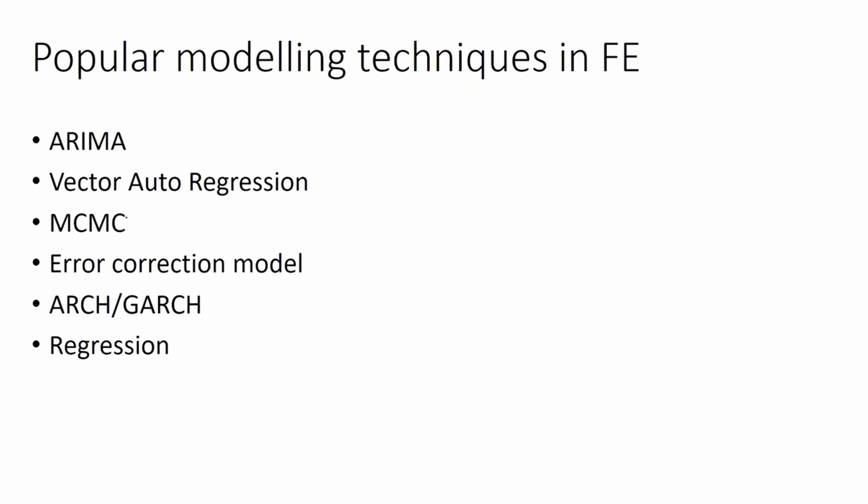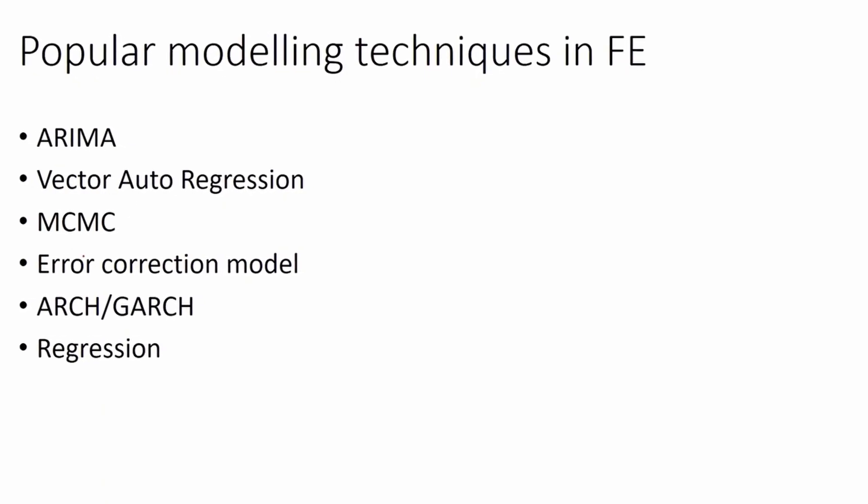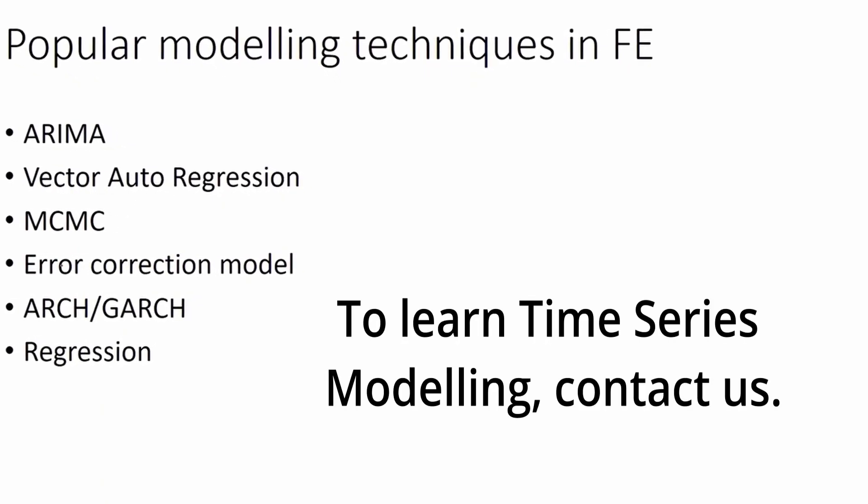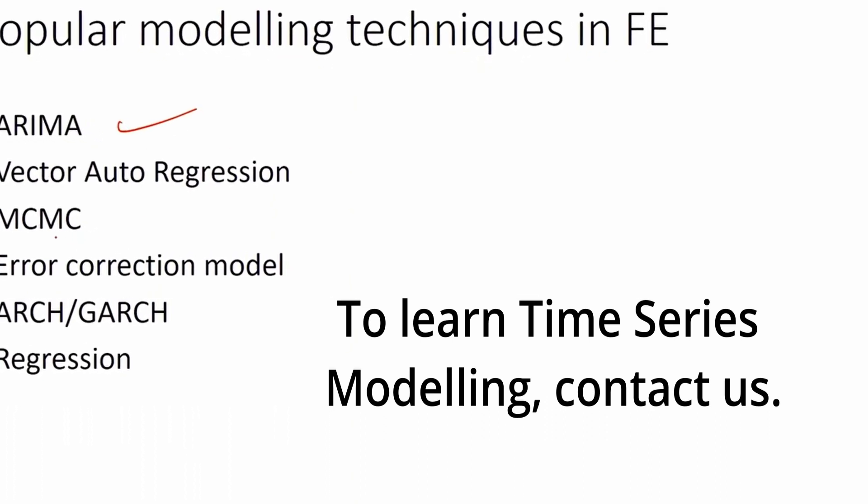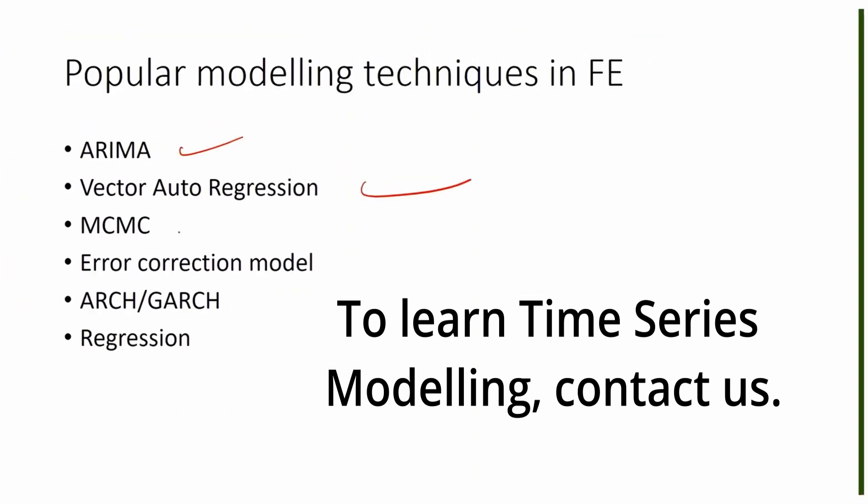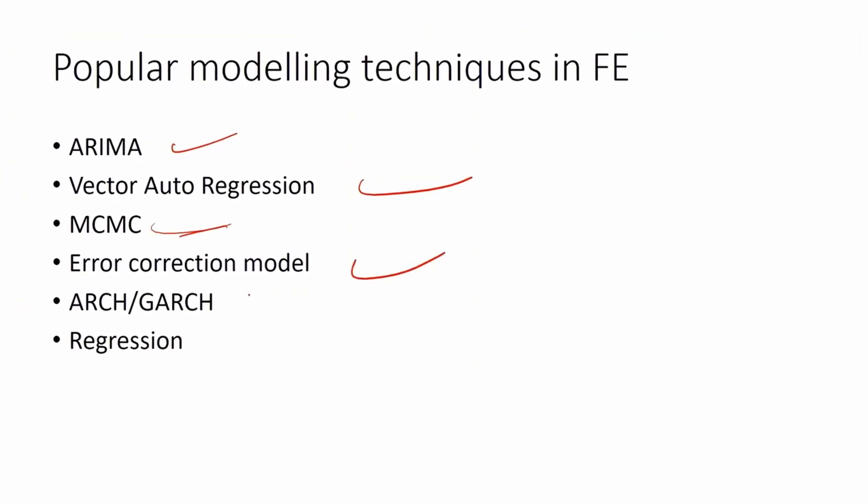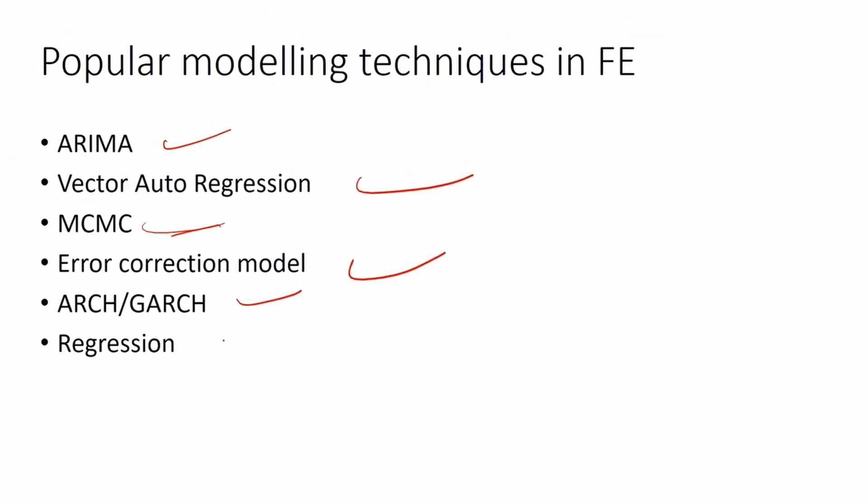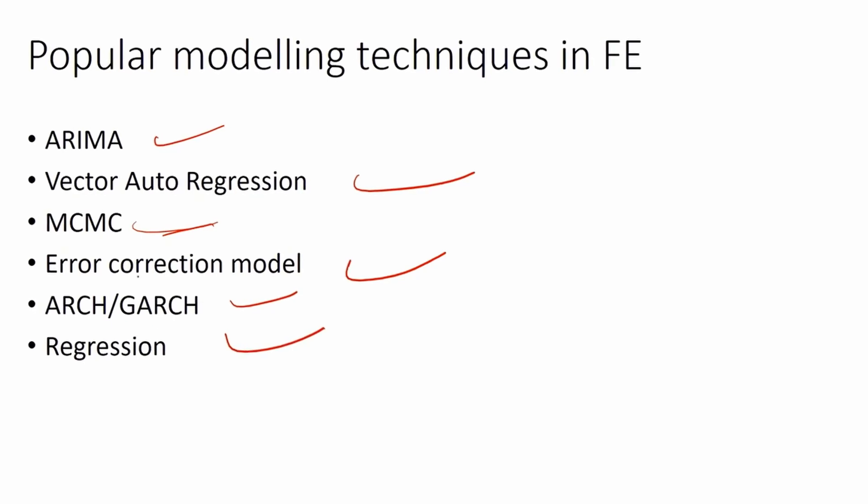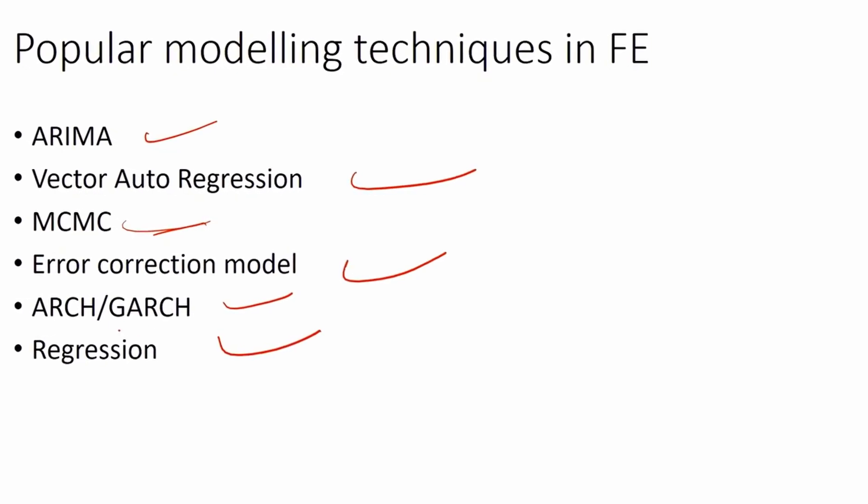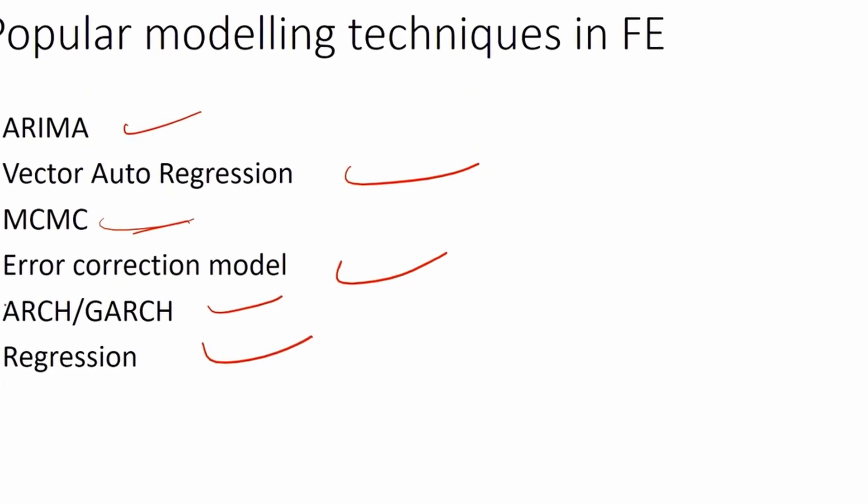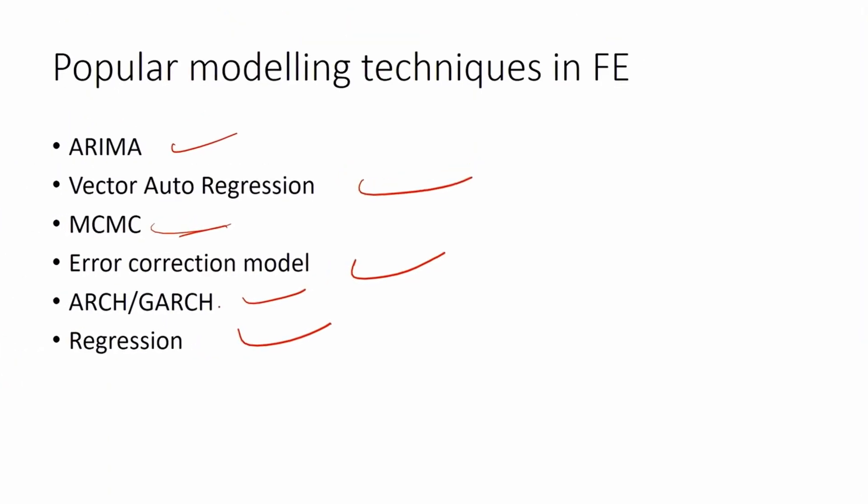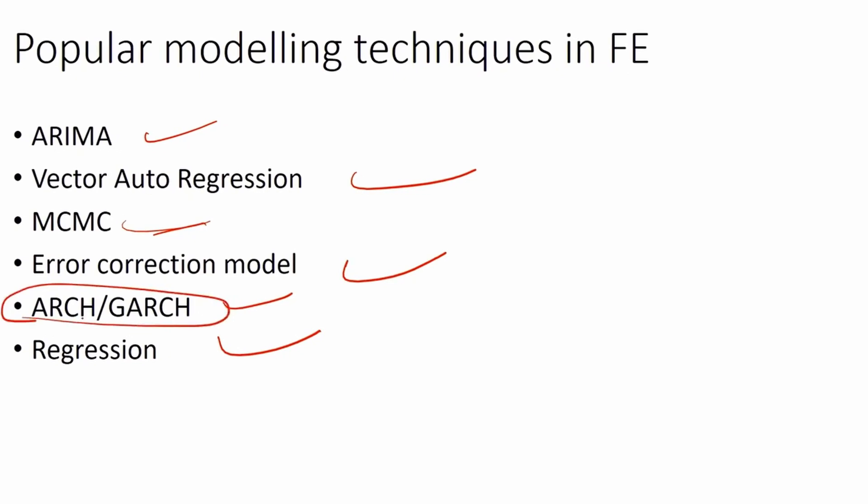Some of the popular modeling techniques in financial econometrics are these. Again, the list is not limited to these topics - there are many more - but some of the famous ones are ARIMA, a time series modeling technique, Vector Autoregression, Markov Chain Monte Carlo, Error Correction Model, ARCH/GARCH, and some regression techniques. Most of them are time series modeling techniques. Time series is heavily used in financial research, whether it's volatility modeling where you use ARCH and GARCH, or price prediction where you can use ARIMA.